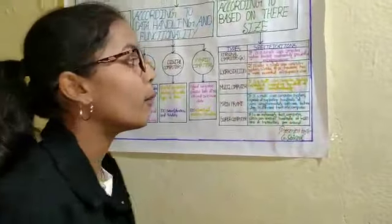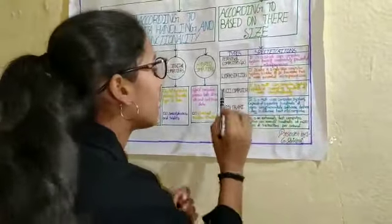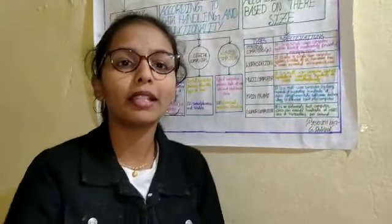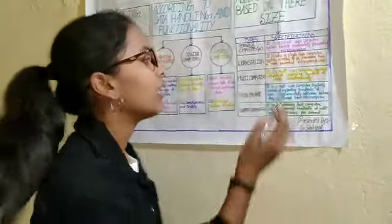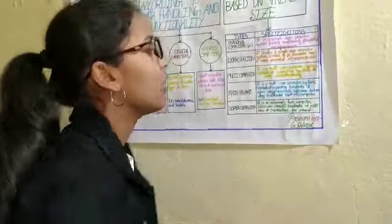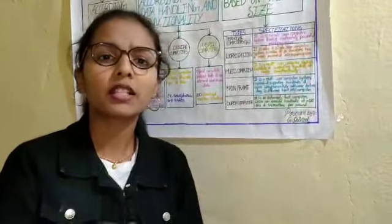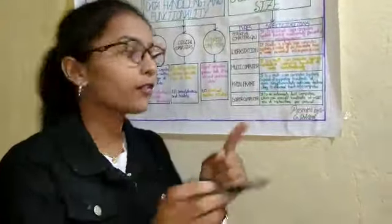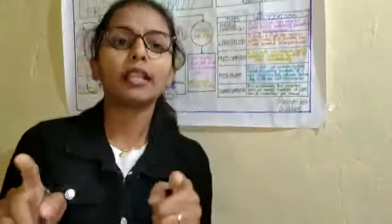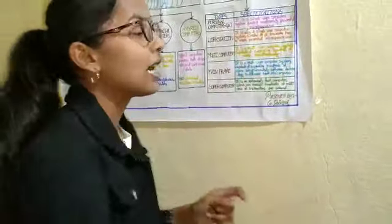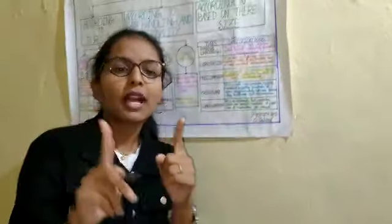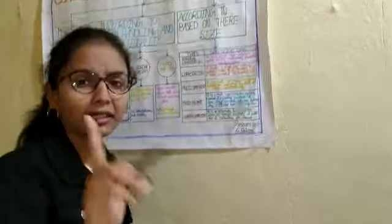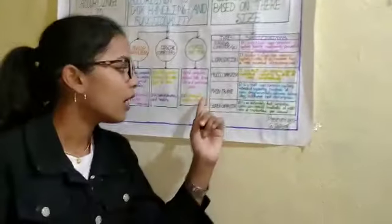Next, multi-computers. You can understand from the name — multi means many. A multi-user computer is capable of supporting hundreds of users simultaneously. The difference between a personal computer and a multi-computer is that a personal computer is single-user, while hundreds of users can use a multi-computer at the same time.